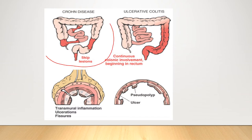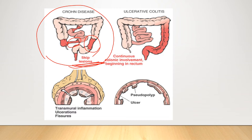Skip lesions represent that in Crohn's disease, it is not compulsory that the whole colon or small intestine be involved. A small part of the intestine and then another small part of the large intestine may be involved. Due to this skip pattern, Crohn's disease causes transmural inflammation affecting all four layers of the GIT, giving the appearance of serpentine — or snake-like — ulcers.